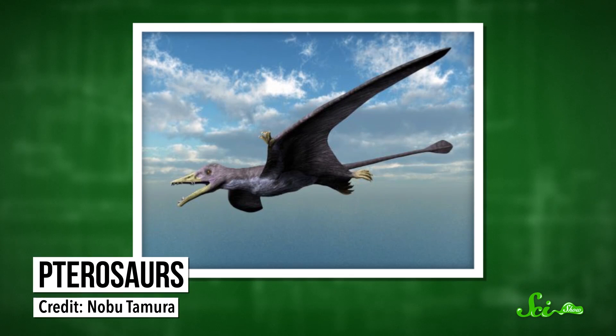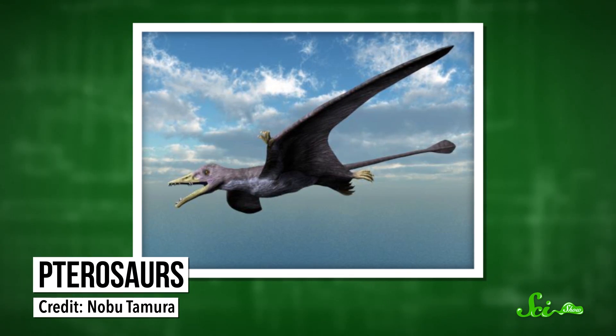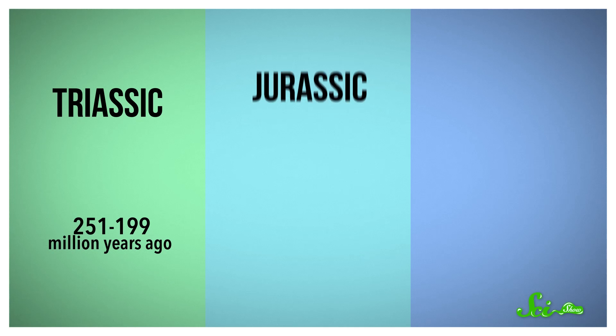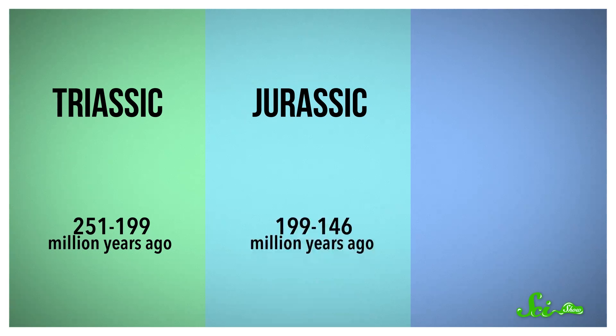Finally, toward the end of the Triassic, a group of archosaurs closely related to dinosaurs — but not dinosaurs themselves — evolved the power of flight: the pterosaurs. After the Triassic came a period that you might have heard of, called the Jurassic period, which lasted from 199 to 146 million years ago.